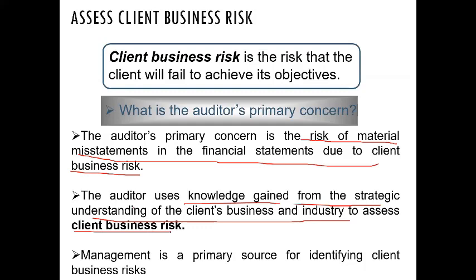The auditor will use information collected in the previous step — the strategic understanding of the client's business and industry — to assess the client's business risk. This includes understanding operations, inherent risks, governance, management strategy, and how the company evaluates performance. All factors discussed in step two help the auditor collect evidence to decide on client business risk, and management will be the primary source for identifying these risks.